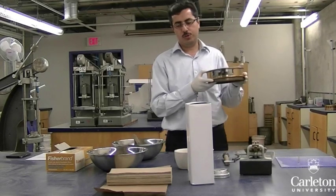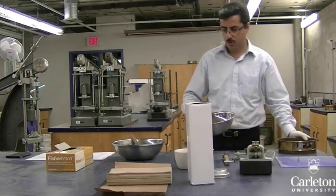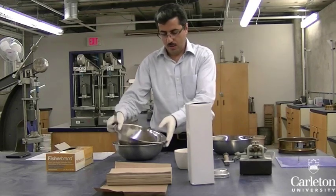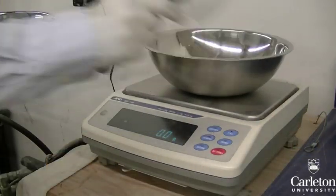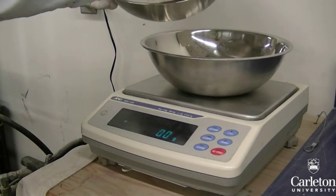For these tests, you will need approximately 200 grams of material passing sieve 40. To measure out a sample, take an empty container like this bowl, place it on the scale, and zero the scale. Then measure out approximately 200 grams of soil.